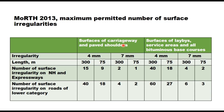The specifications given in MORTH 2013 are slightly different; they state that the maximum permitted number of surface irregularities should not exceed specified values. When irregularity is 4 mm or 7 mm, in a length of 300 meters the number of surface irregularities on national highways and expressways should not be more than 15, and the number on roads of lower category should not be more than 40. Similarly, this applies to surfaces of lay-bys, service roads, and all bituminous base courses — these are the values given in MORTH specifications.